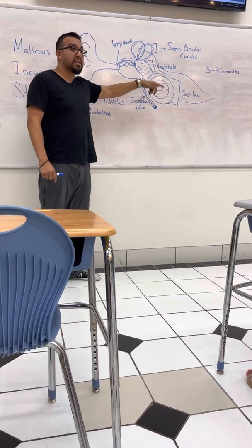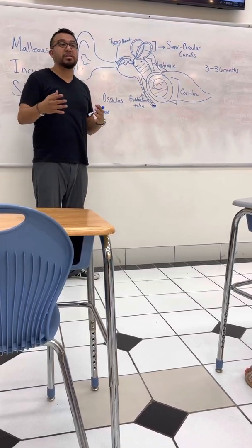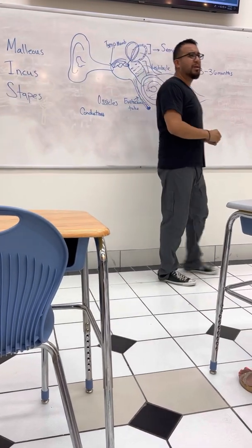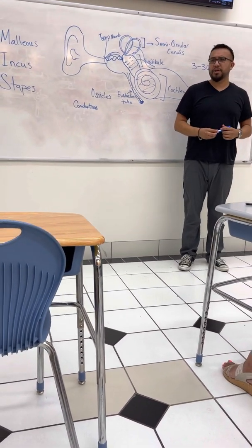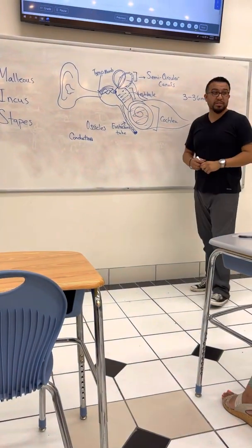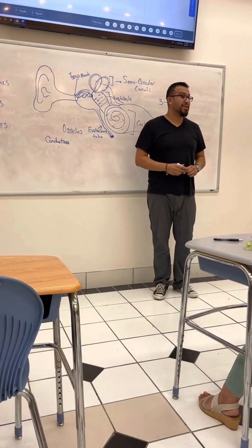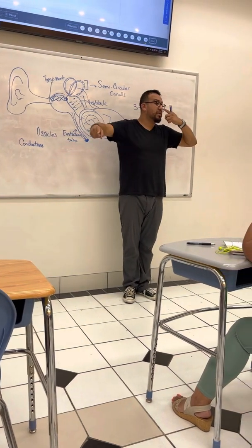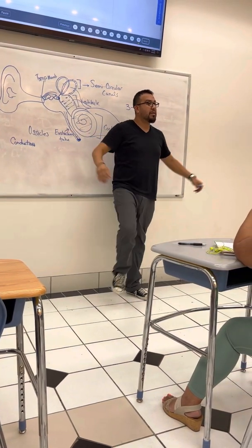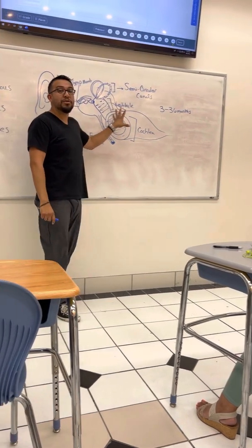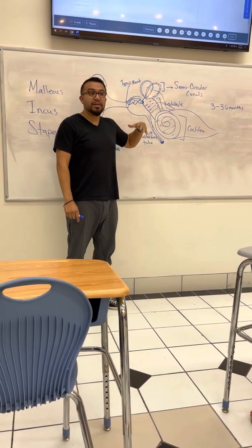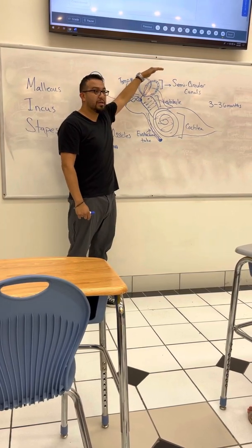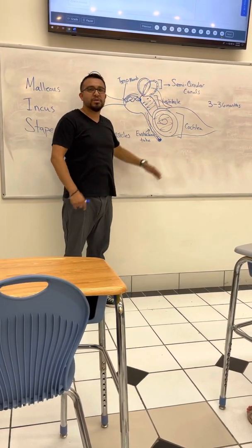Have you guys ever been pulled over by cops and they think that you're drunk? What do they have you do? The sobriety test, right? It's called the Romberg's test. My point is that they have you stand stationary, do all this, can you touch your toes and you stand up? Because all of that is assessing your inner ear's ability to conduct all those impulses. And if you're drinking alcohol, what does CNS depressant do to the brain? It depresses it, so you're going to have issues with it.